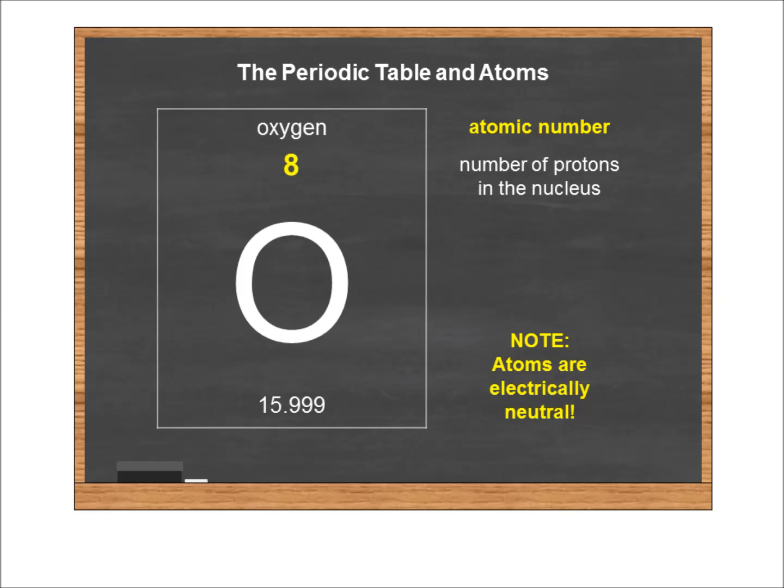We'll deal with charged particles in another lecture. So if atoms are electrically neutral and protons are positively charged, that means the atomic number also tells us the number of electrons in the electron cloud for that atom. At the bottom, we see what's called the atomic mass.